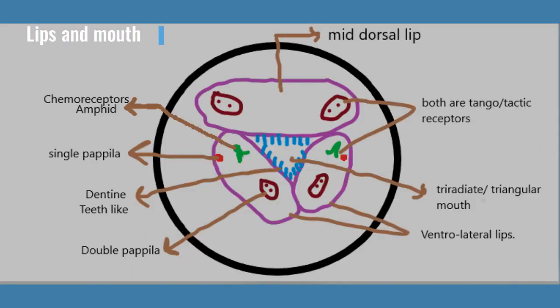Now the mouth and lips of the roundworms. You will see 3 lips in pink color: one mid-dorsal and 2 ventrolateral lips — named because of their position. You will also see the red teeth, which we call dentine. Because of these lips and teeth, the mouth is in a tri-radiate, triangular shape.